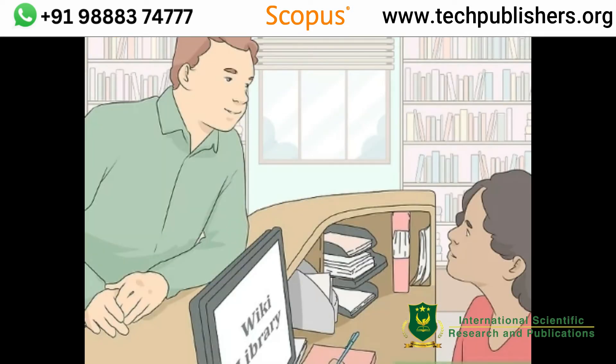The second method of accessing scholarly databases is to find out what subscriptions are available through your school's library. If you attend a larger college or university, the library likely maintains subscriptions for many scholarly databases where you can find quality research articles. Your school librarian will be able to tell you which databases you can access, and there might also be a list on the library website.